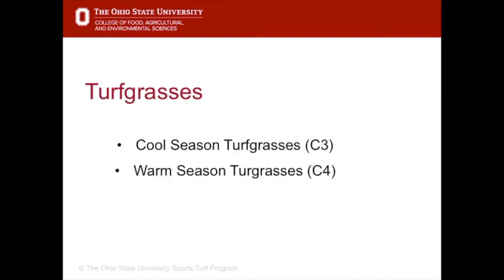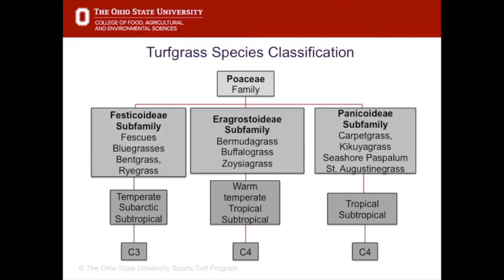There are two types of turf grasses: cool season turf grasses, called C3 grasses, and warm season turf grasses, which are referred to as C4 grasses. All grasses are in the Poaceae family.